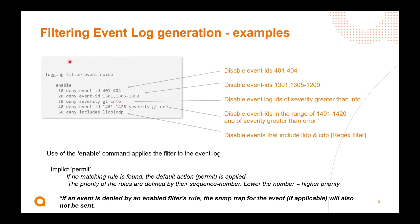If we wanted to apply this to the event log, here's a CLI example. We've got a logging filter called 'event-noise' — I've enabled it so it's applying to the event log, and I've got some variations of deny filtering. The first one is a straightforward deny on a range of event IDs — nice and straightforward. The second one is a slight variation of that to show the syntax flexibility: 1301 and 1305 to 1390.